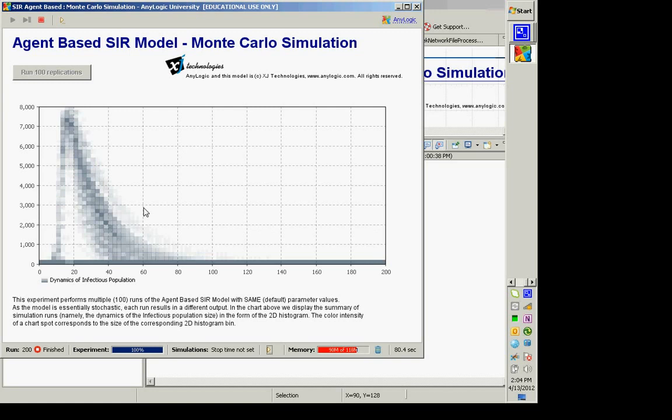we've got this decline because people are recovering. And the amount of time that it takes for someone to recover becomes really important in this phase. If they're recovering more quickly, this is going to be declining more precipitously. If it takes longer for them to recover from infection,